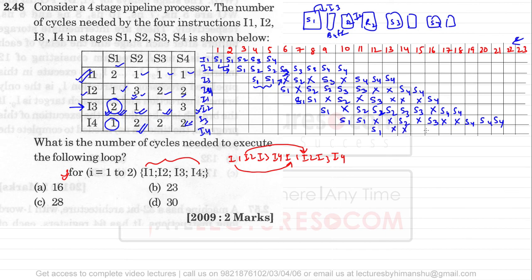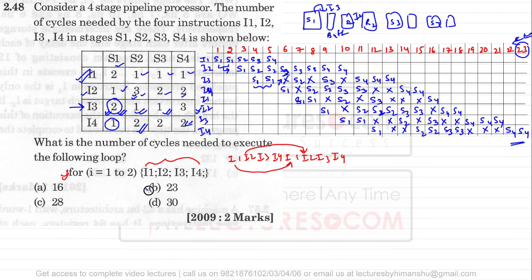Finally, I4 enters stage S1 at the twelfth clock cycle. Stage S2 becomes available only at the fifteenth clock cycle, so I4 enters S2 at cycle 15. S3 is available so I4 proceeds through S3, but S4 is not available immediately — I4 enters S4 only at the twenty-second clock cycle, finishing at the twenty-third. All instructions complete at the 23rd clock cycle, so the answer is 23.